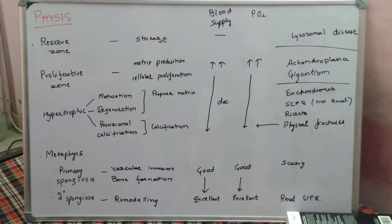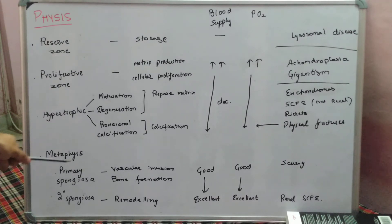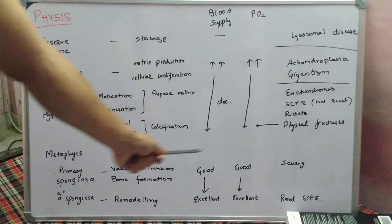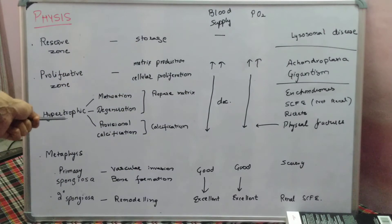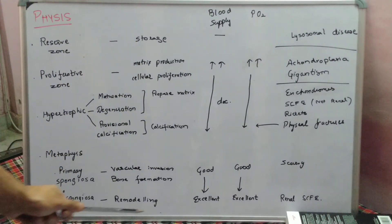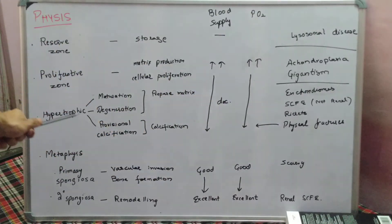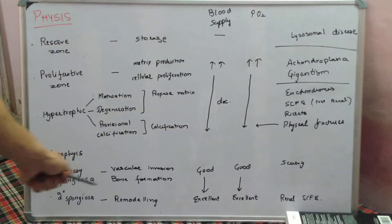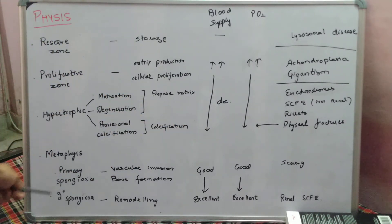To summarize the zones: physeal fractures occur in the hypertrophic zone, rickets occurs in the hypertrophic zone, and scurvy occurs in the metaphysis.